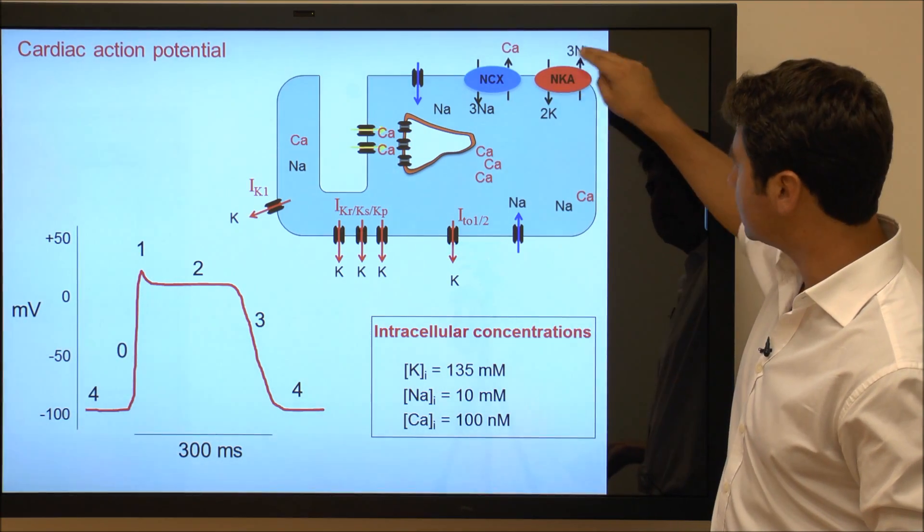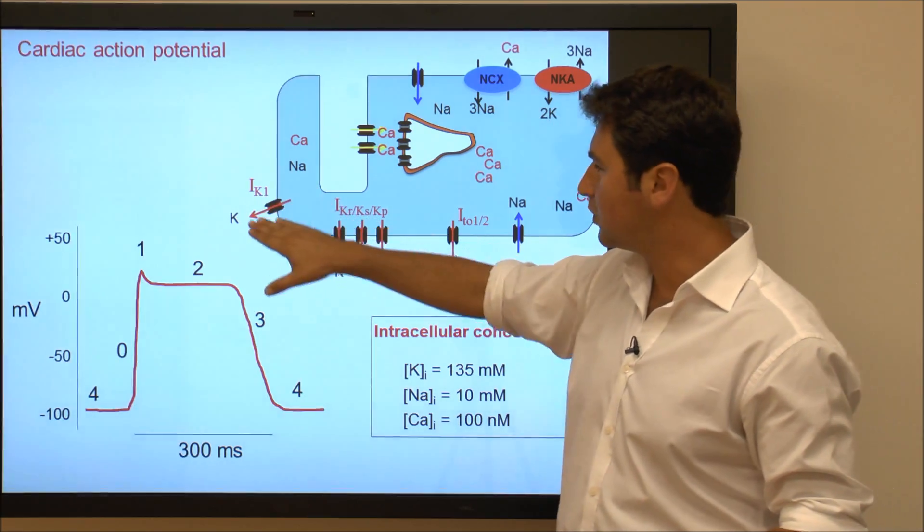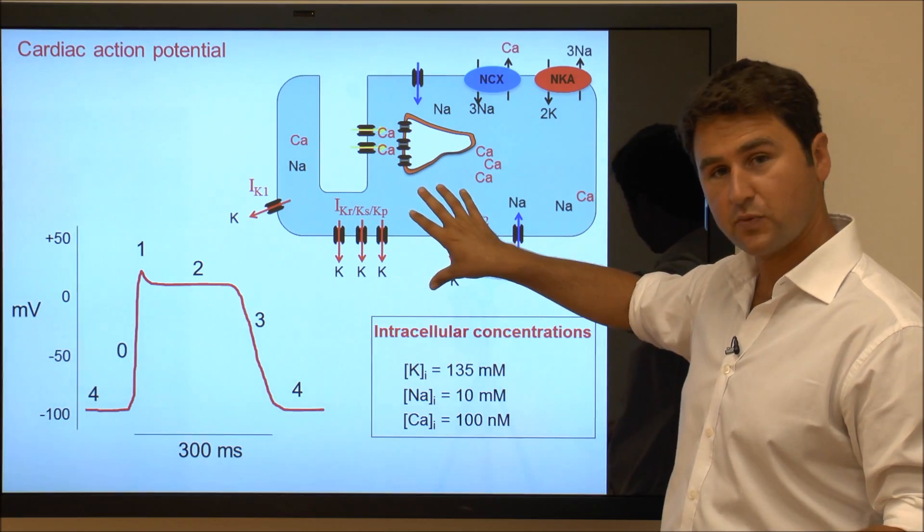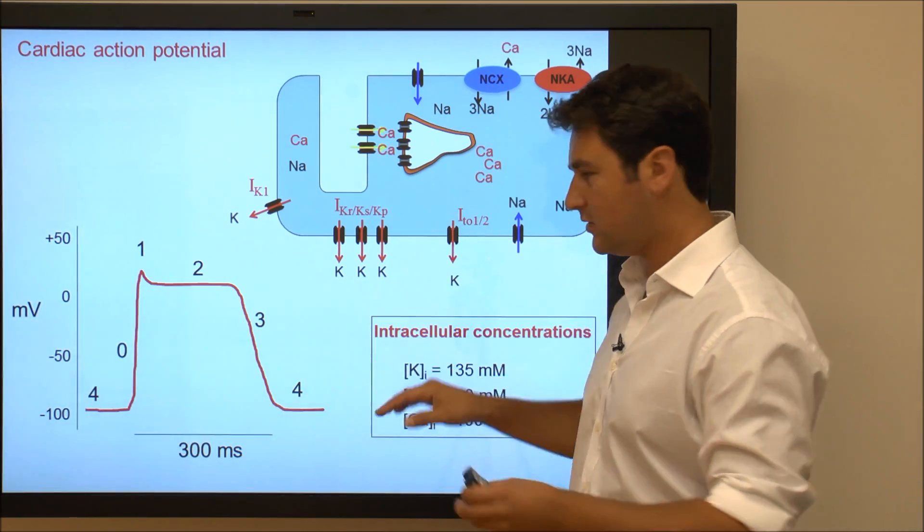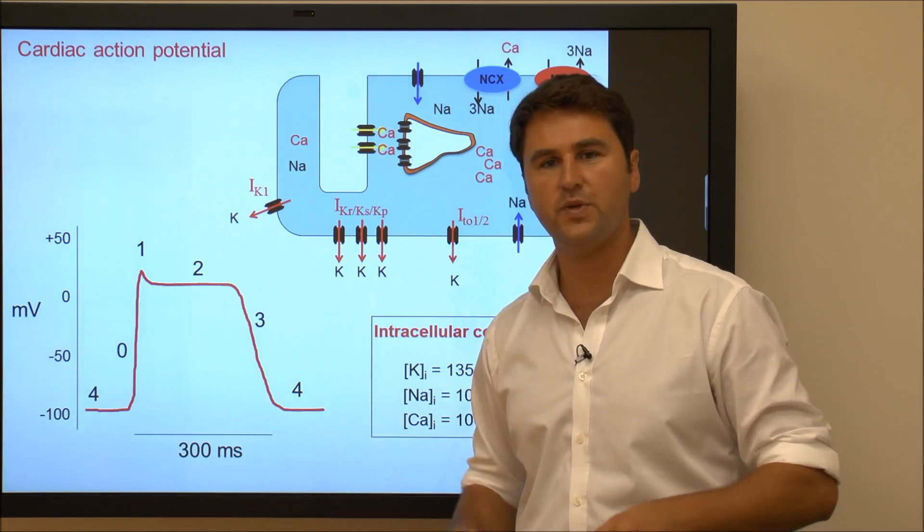Again at minus 70 millivolts, you've still got the activity of the sodium pump and also the activity of IK1. The other potassium channels switch off at minus 90 millivolts in order to keep the cell at its resting membrane potential until it's ready for its next beat.